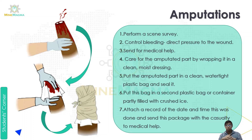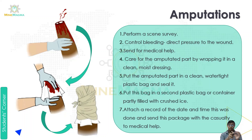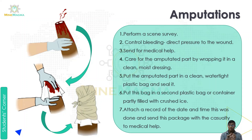The amputated part — the part that has been cut off — for example, looking at the image, if the hand is cut, we apply direct pressure to control blood flow, and then we wrap the amputated part in clean and moist dressing. That is our fourth step. The fifth step is to put the amputated part in a clean, water-tight plastic bag and seal it.